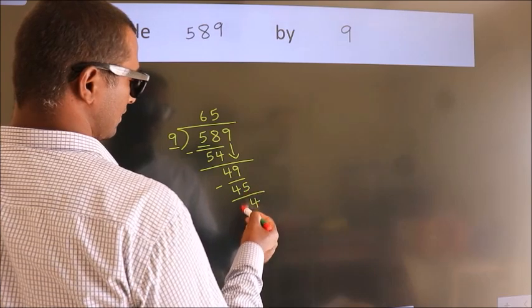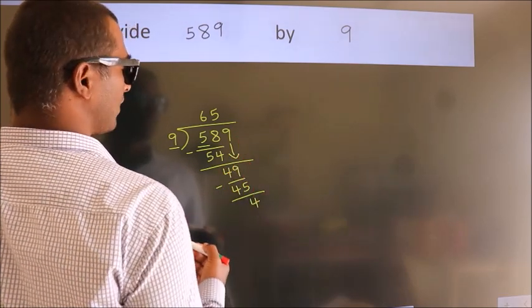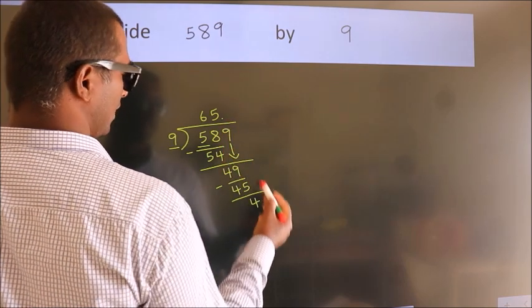After this, no more numbers to bring down. So what we do is we put a dot and take 0.